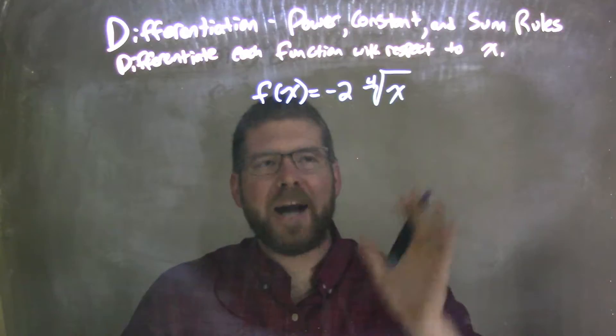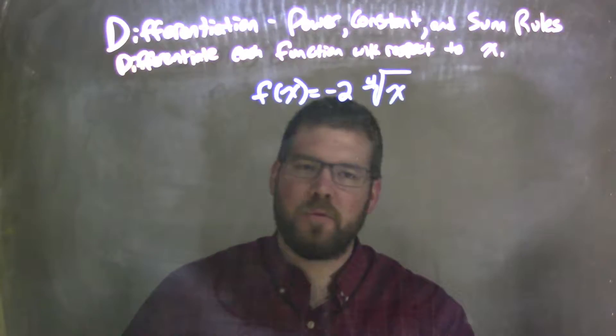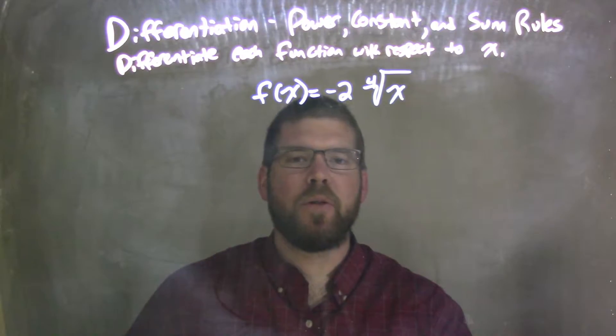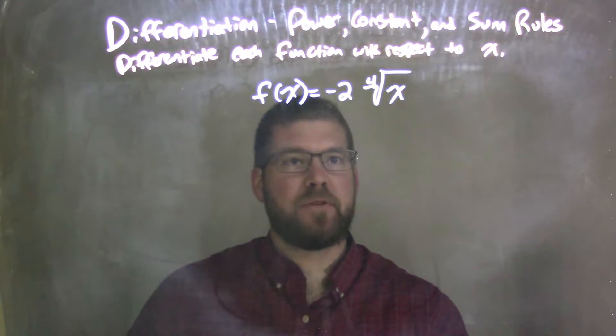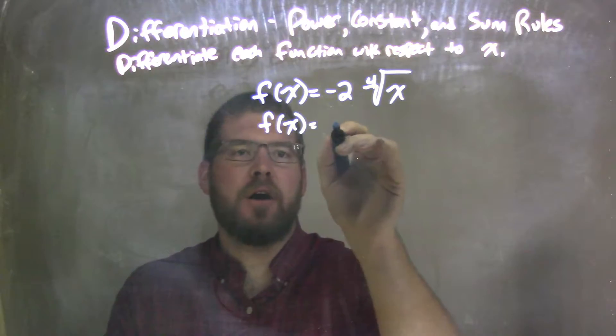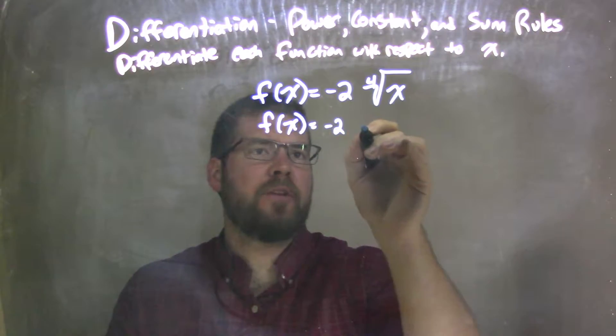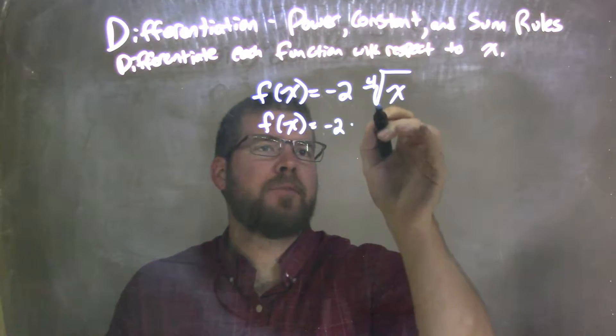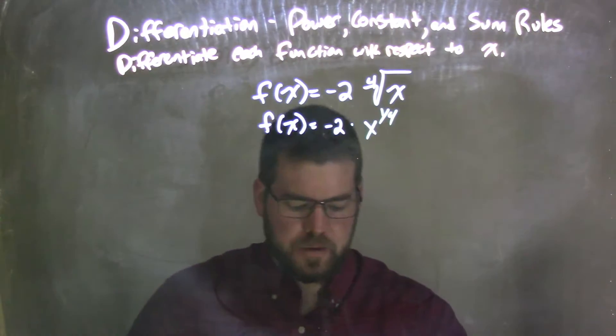To derive, I really don't like seeing square roots, fourth roots, cube roots, anything with a radical. I prefer to see them as fractions. So my first step here, I'm going to rewrite this function. I haven't derived yet or taken the derivative, but I'm going to write this to be negative 2 times, instead of the fourth root of x, x to the one-fourth power. And we know they mean the same thing.